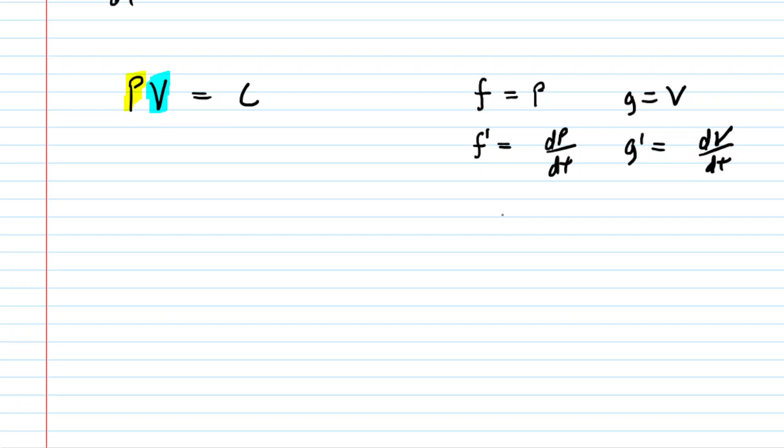And because we're doing the product rule, we can plug these pieces into what I like to call fig plus gif. This is a version of the product rule. It basically just tells us to take our f prime, which was dp dt, multiply that by g, which was the v, plus g prime, which is dv dt, multiplied by f, which was symbolized by p.